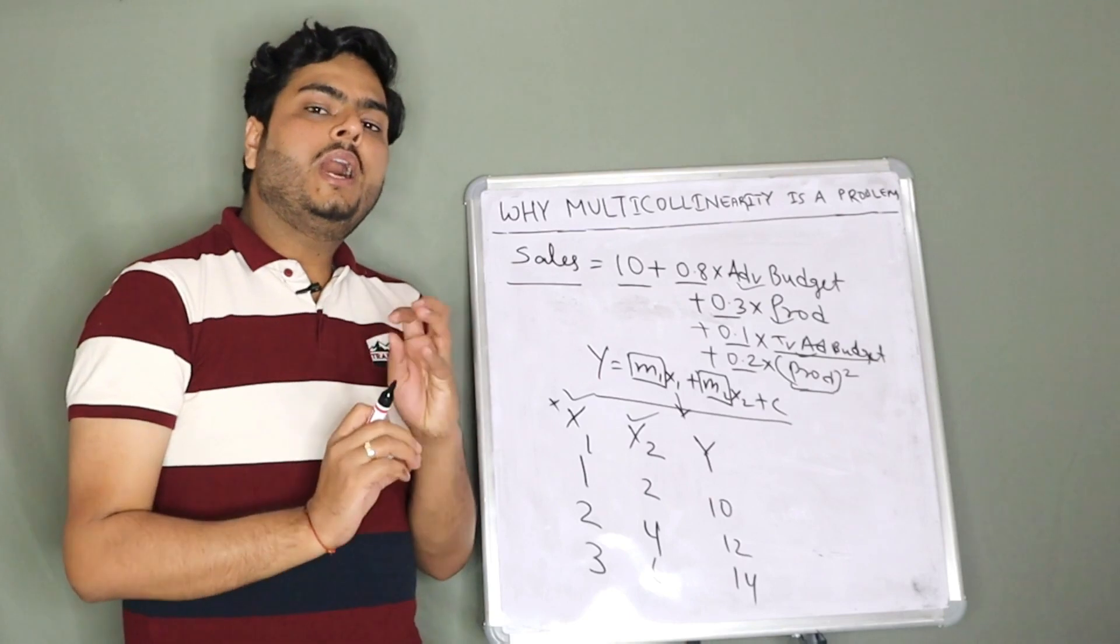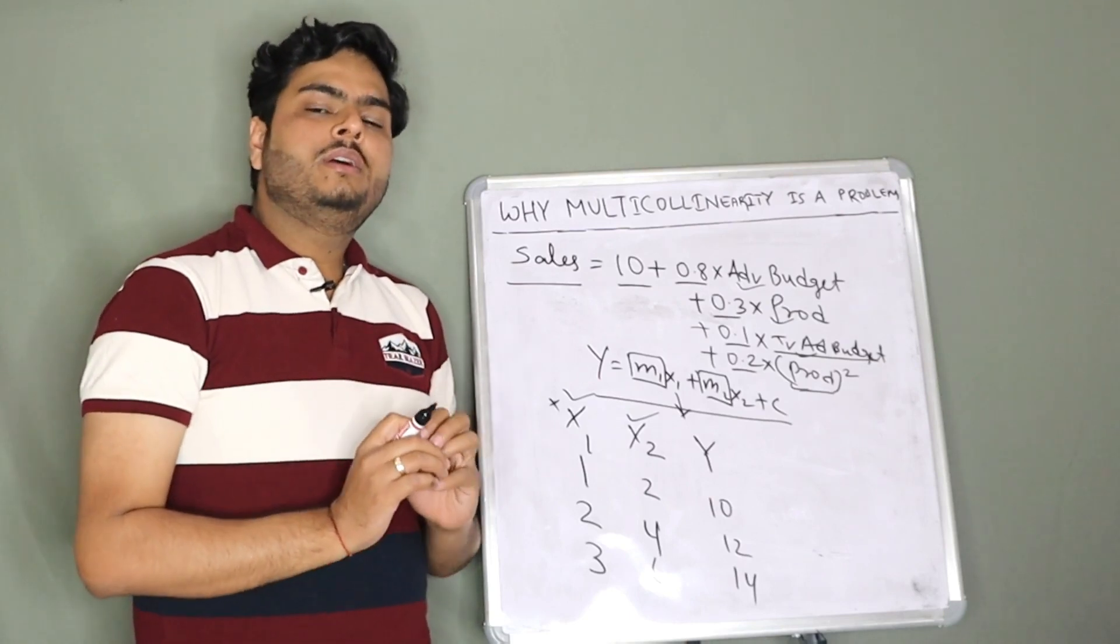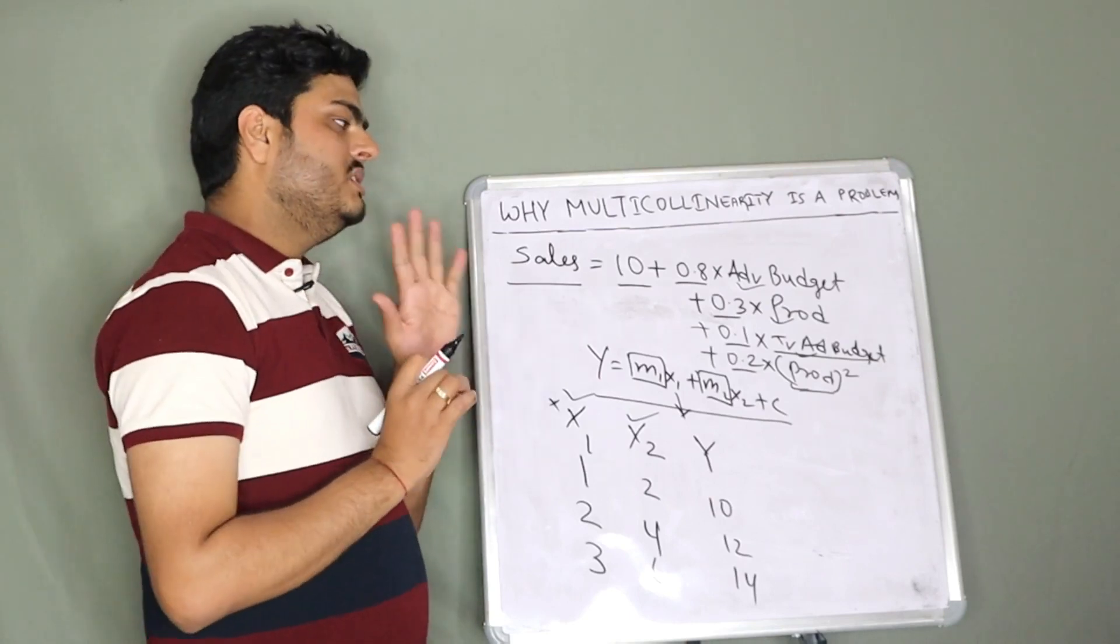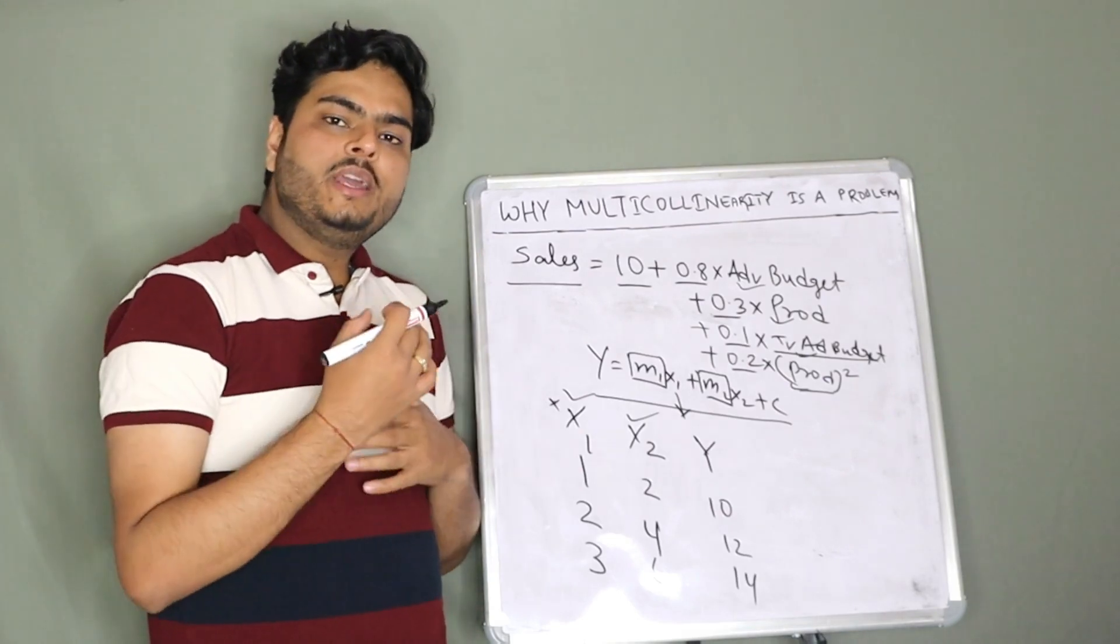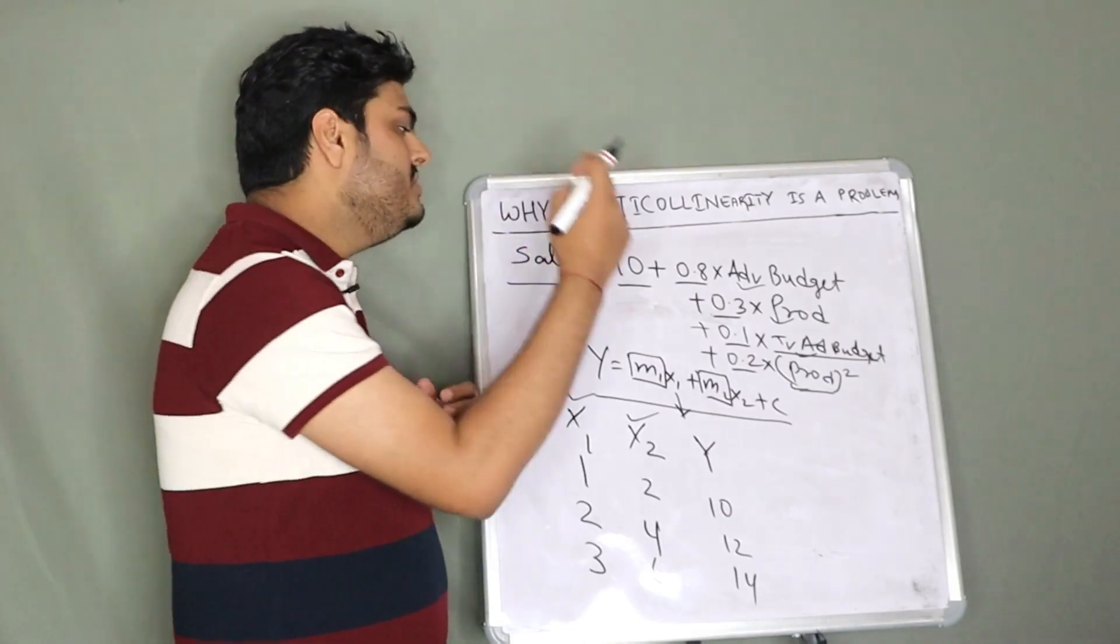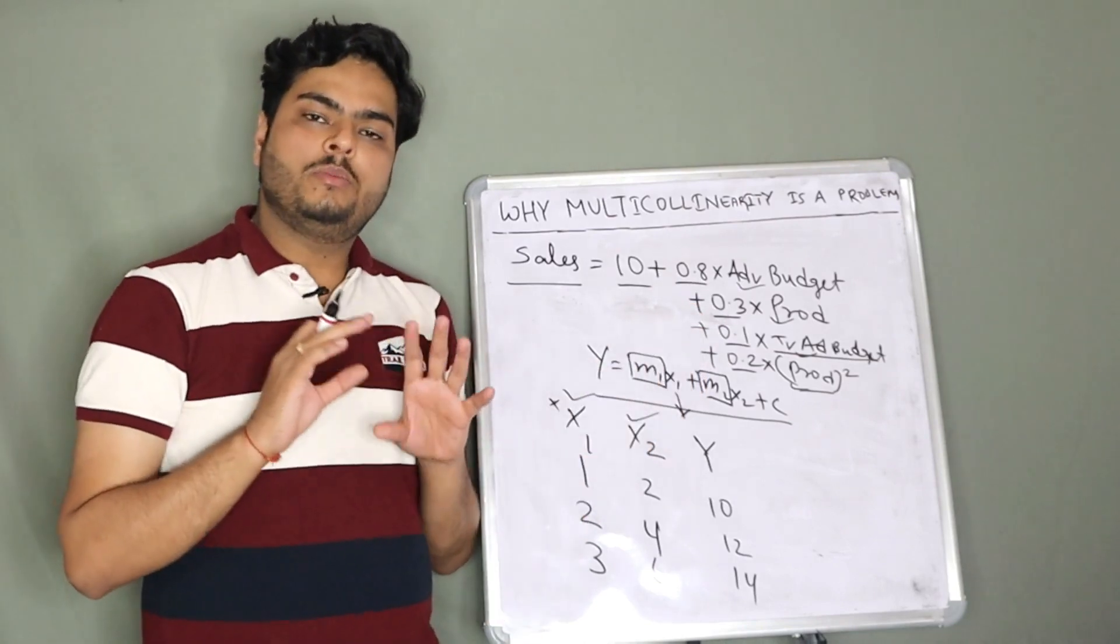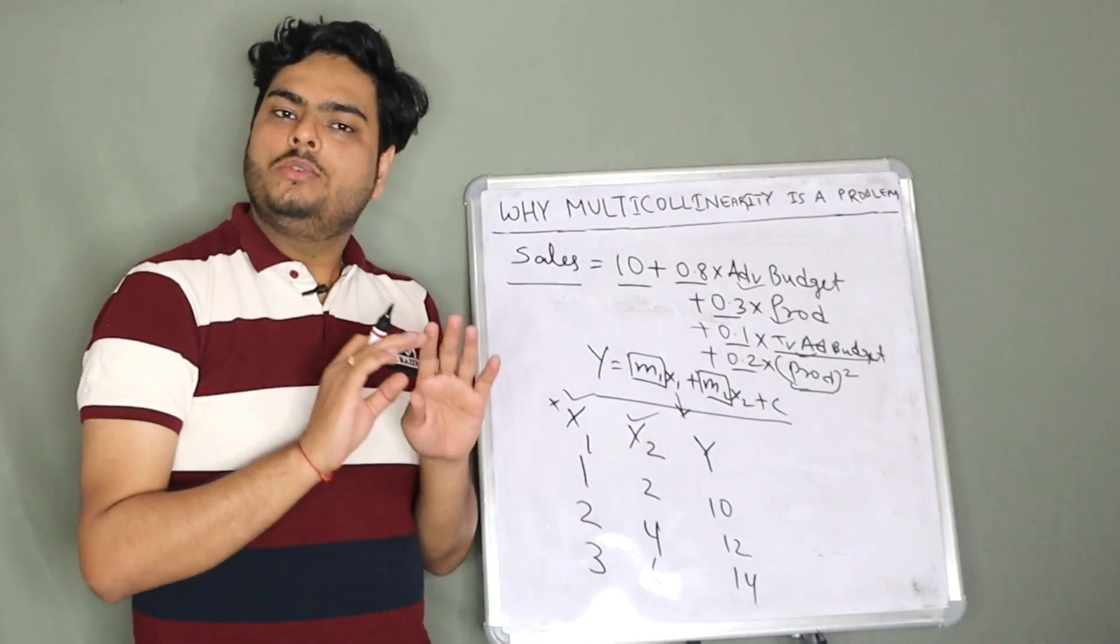You will get the answer of how multicollinearity screws your coefficients. If by any reason or by any means our coefficients are screwed in a regression model, then that model is of no use.